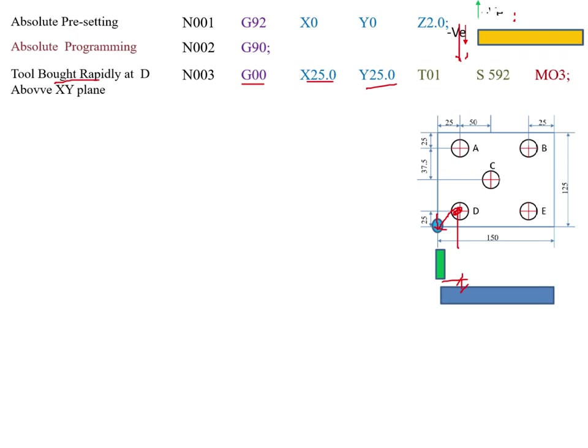After reaching the D point, next I should select the tool. My tool is T01, and I am also selecting the spindle speed, which is already given as 592 rpm. After reaching here, we should start the spindle and rotate it in the clockwise direction, so I give the M03 code in the block.